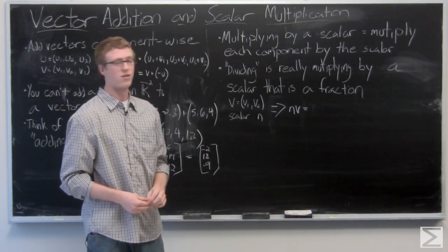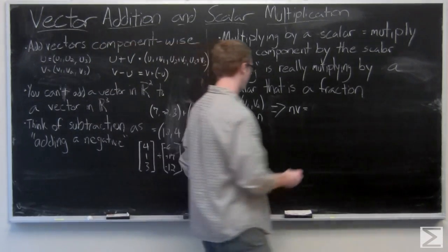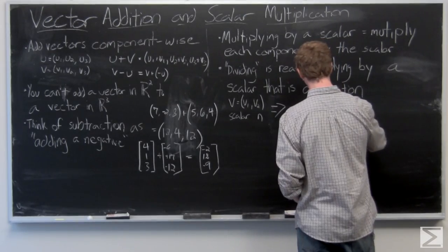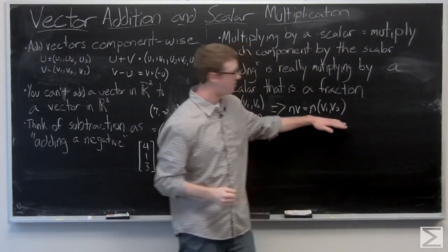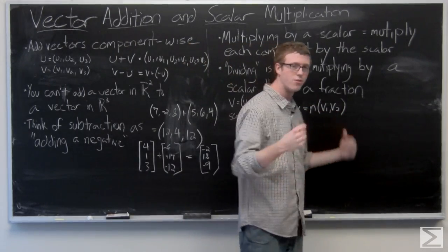So we're going to take a look at vector v, nv, and v1, v2, the resulting vector.